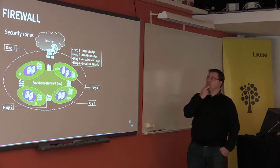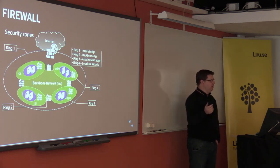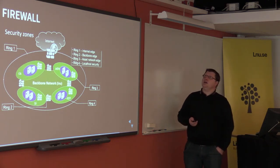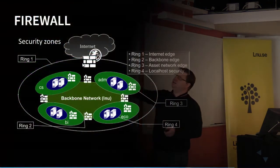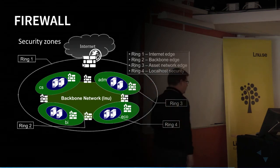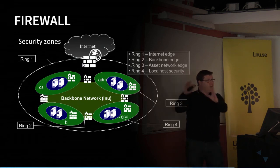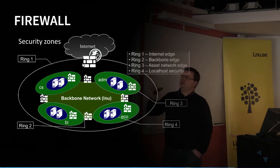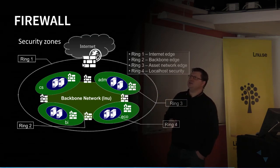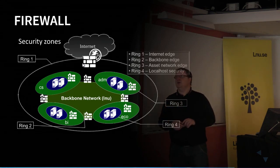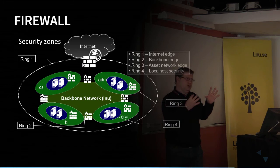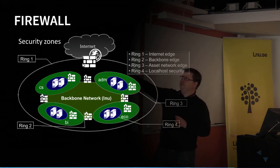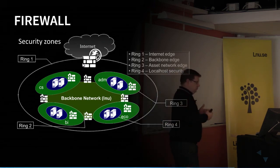Firewalls. When talking about how to secure our networks, we usually talk about different rings of security. We have the internet edge ring — the last frontier before the internet. For a big company, we might have different cities or departments with different network subnets, so we need something called the backbone edge with firewalls between these parts. Then we have the assets network where our actual servers, clients, and printers live. The final frontier is local host security — the firewall installed on your physical computer.